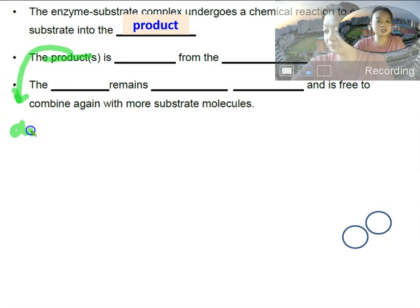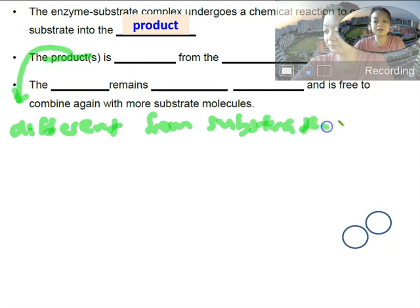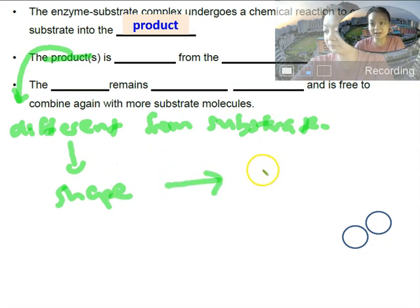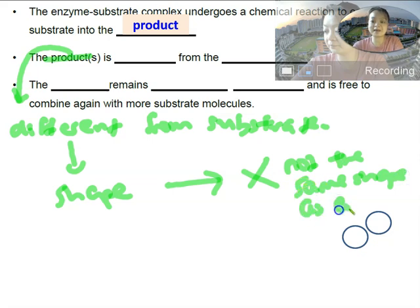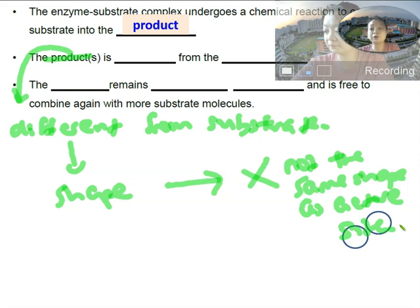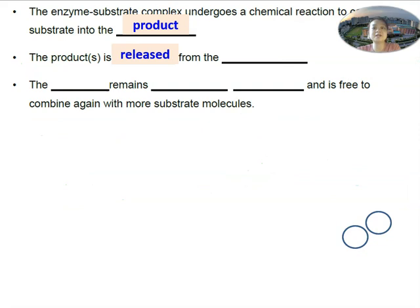The product is actually different from the substrate — it's different in shape. Since it is different in shape, it is not the same shape as the active site. Since it's not the same shape as the active site, the product cannot stay in the active site for long. So the product must actually be released from the active site. The product is released because the product is different from the substrate and therefore has a different shape.